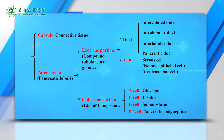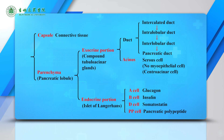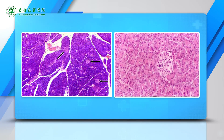Let's look at the histological structure. A thin capsule of connective tissue covers the pancreas and extends into it, separating the pancreatic lobules. The pancreas is a mixed exocrine and endocrine gland. In the left micrograph, the square shows one pancreatic lobule, which consists of an exocrine portion and an endocrine portion.